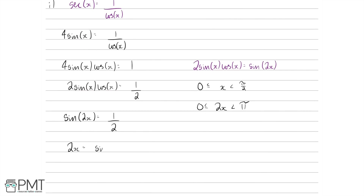So 2x is therefore going to be the inverse sine of a half. We can use a CAST diagram to help us here — C, A, S, T. The CAST diagram tells us when trigonometric curves are positive and negative. C is when cos is positive; A is when all are positive; S is when just sine is positive; T is when tan is positive. Since we have positive a half, sine is positive in two quadrants — so we draw our lines in those two quadrants.